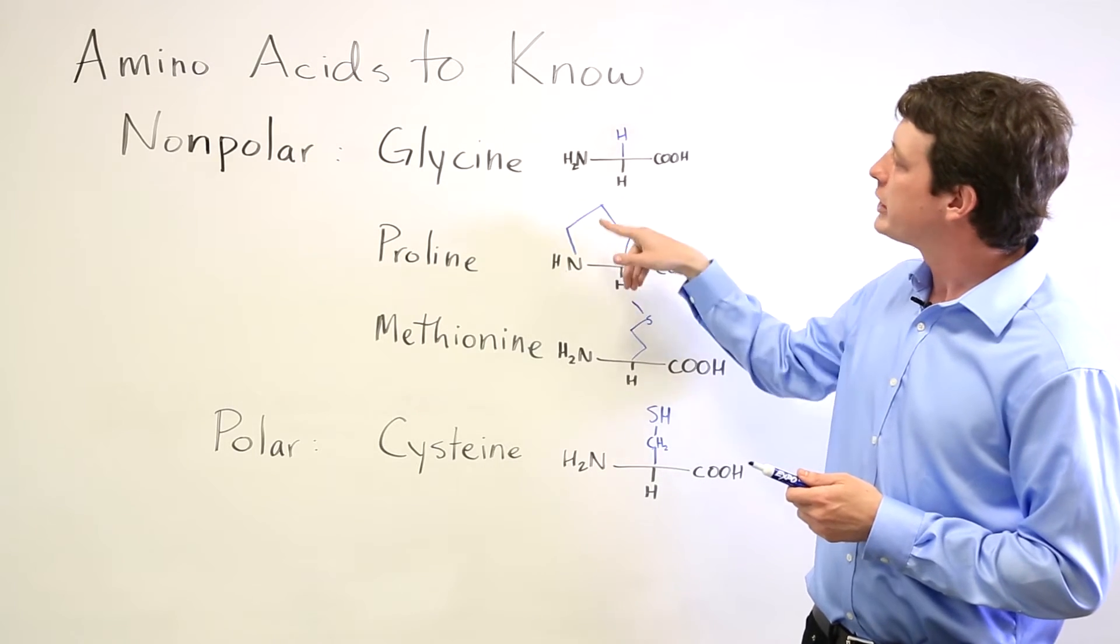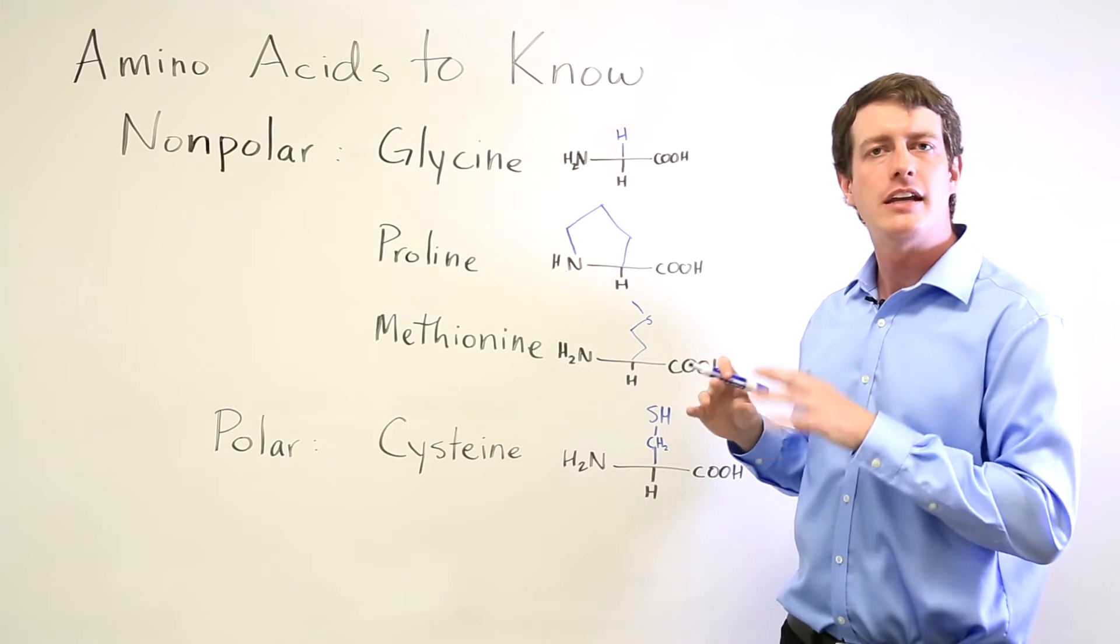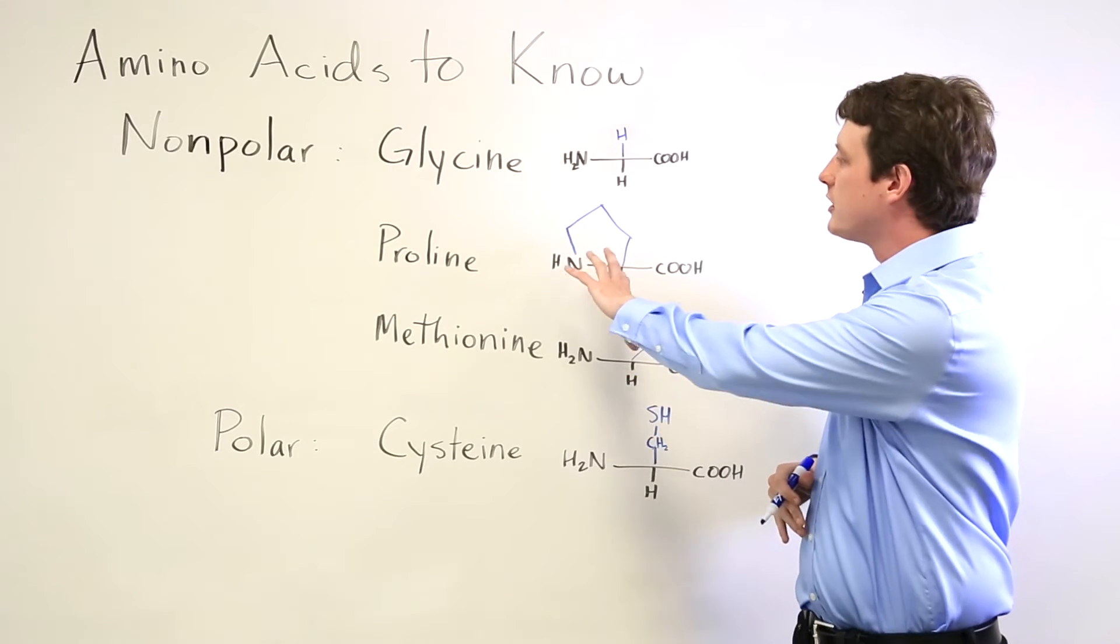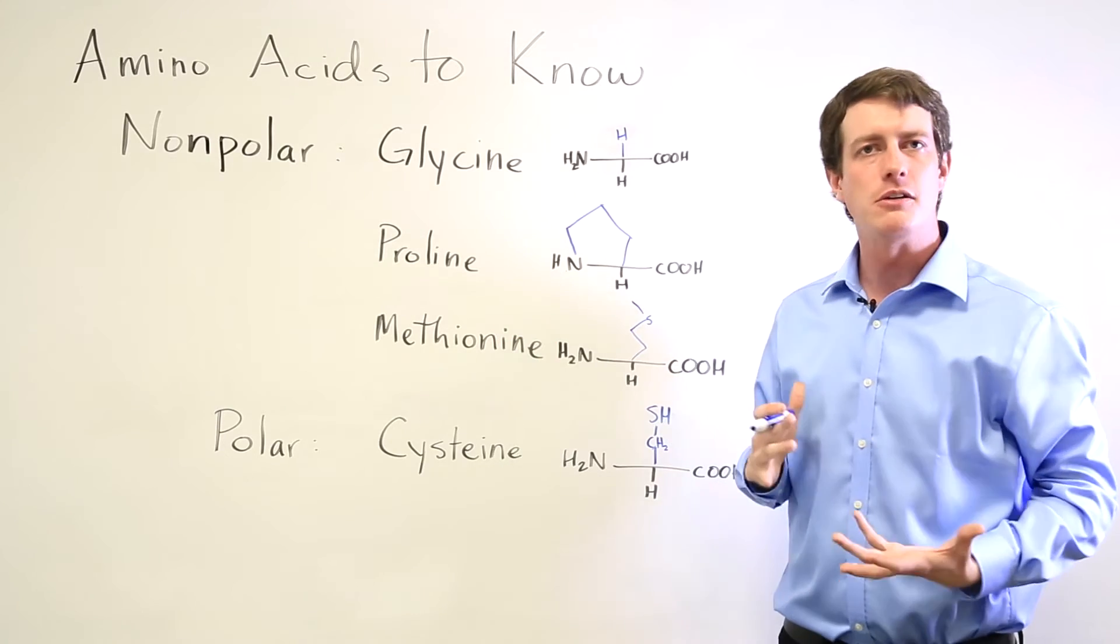Proline is interesting because it has a ring-shaped side chain and this can often put kinks in the secondary or tertiary structure due to the fact that this doesn't interact in a linear chain the way a lot of other amino acids do.